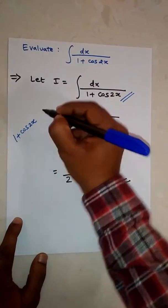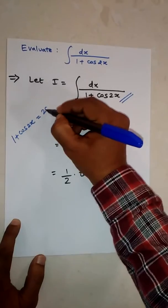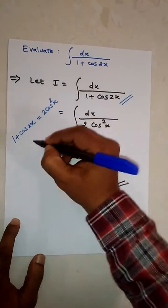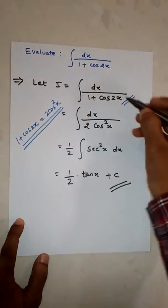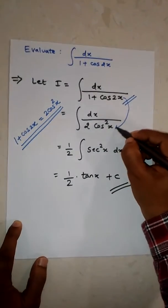Now, as per trigonometry, 1 plus cos 2x is equal to 2 cos square x. As per trigonometry, we have one formula, so replace this with 2 cos square x.